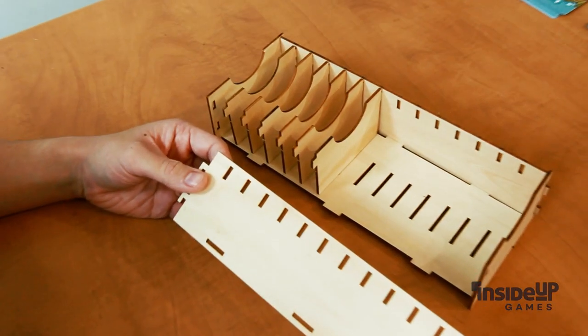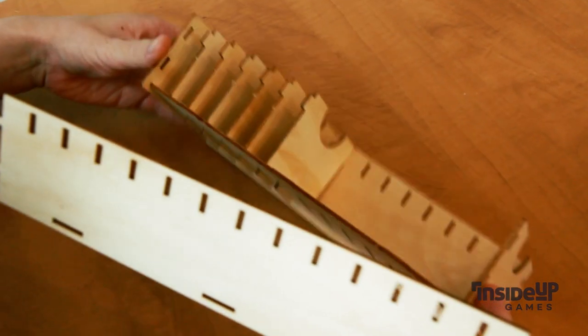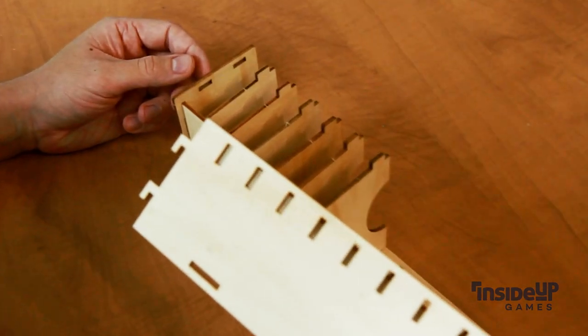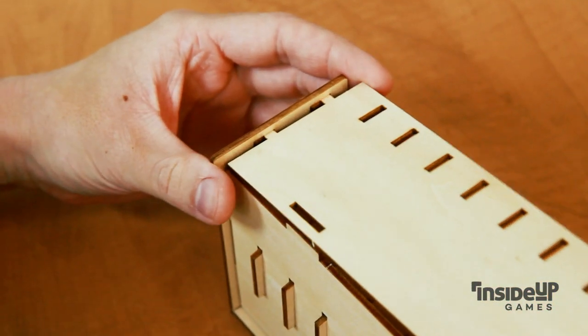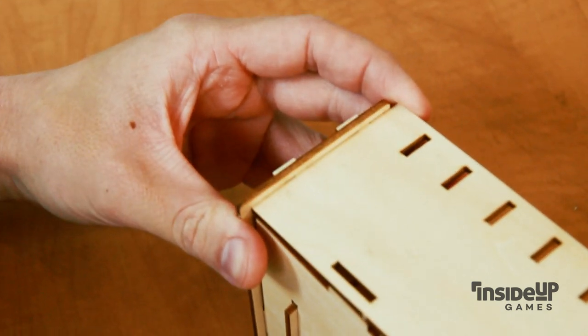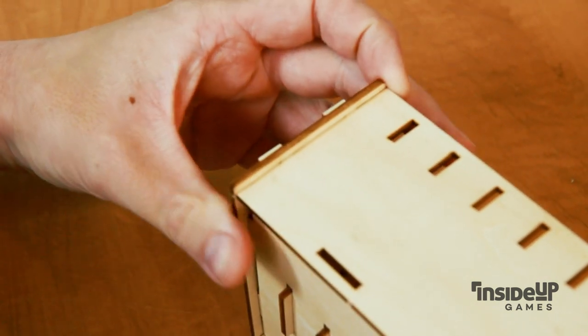The last step will be to locate the remaining long edge piece and to attach it to the tray. First, slide the two hooks to one of the end pieces, then slide down so that they lock into place.